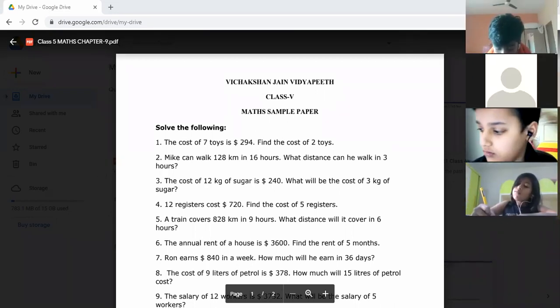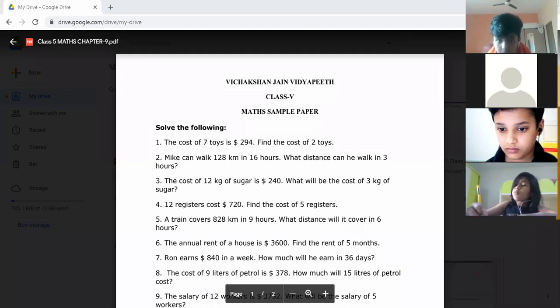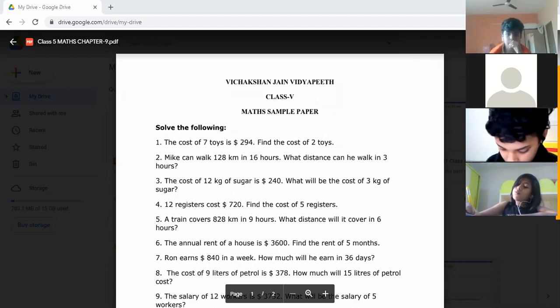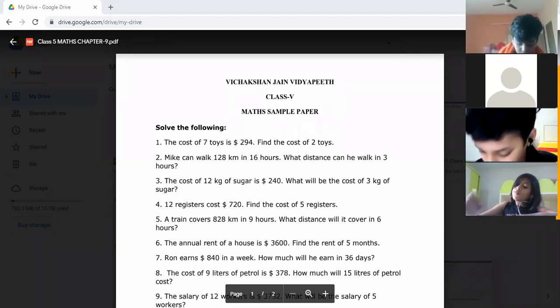Question number one: The cost of 7 toys is 294, find the cost of 2 toys. So for finding cost of 2 toys, you need to find the cost of one toy first.